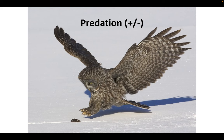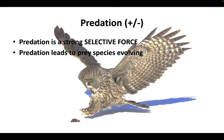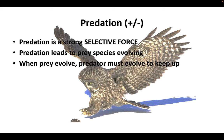Predation is an interaction where one species kills and consumes the other. It is a very strong selective force and can lead to the prey species evolving — for example, if a prey species evolved white fur in wintertime, that would be a great adaptation. When the prey species evolves, the predator species has to evolve to keep up. We call this an evolutionary arms race. We'll look at this with moths and bats, and how that interaction caused changes in characteristics of both species as they evolved.